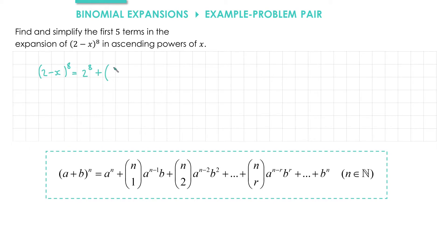So we have 8 choose 1, we'll leave a bit of space, 8 choose 2, 8 choose 3, and 8 choose 4. That will give us the first five terms.